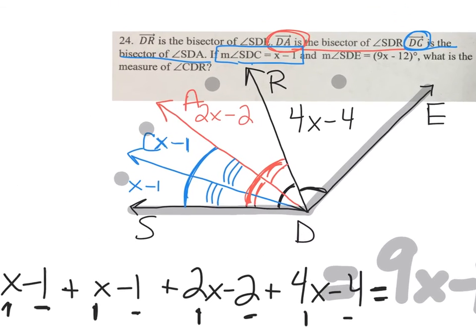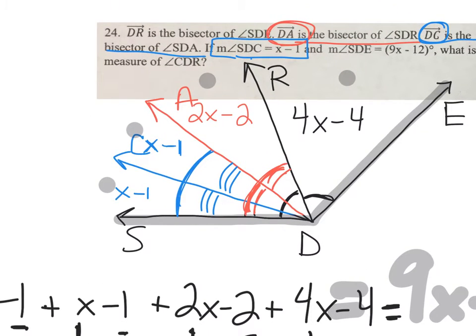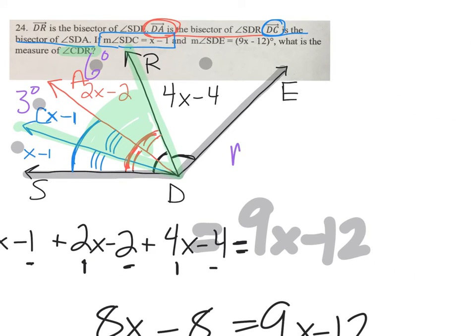So x equals 4. I am asked to find the measure of angle CDR, which is C to D to R, this angle right here. So if I simply replace x, I get this as 3 degrees and I get this as 6 degrees. So the measure of angle CDR is going to be a whopping 9 degrees.